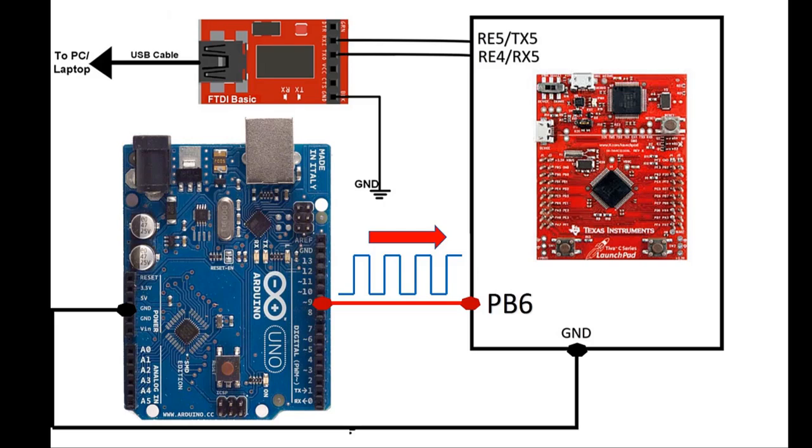To see the demo and working of this code, we will connect the PWM signal with variable duty cycle to the PB6 pin of TM4C123 Tiva launchpad.